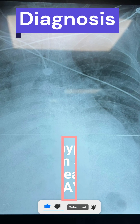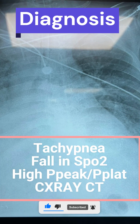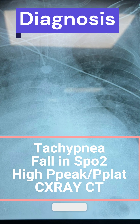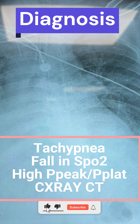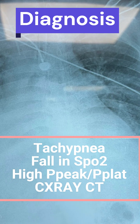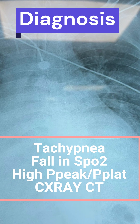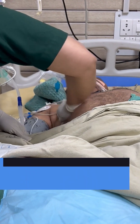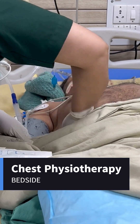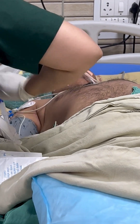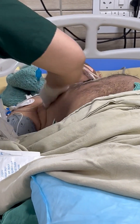The signs and symptoms to diagnose lung atelectasis are tachypnea, fall in SpO2, and high peak and plateau pressure. Investigations like chest X-ray and CT scan can be done.